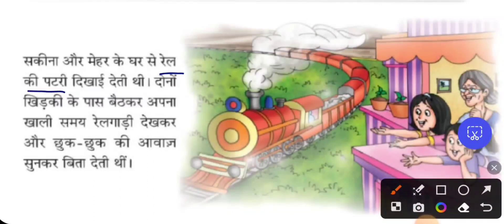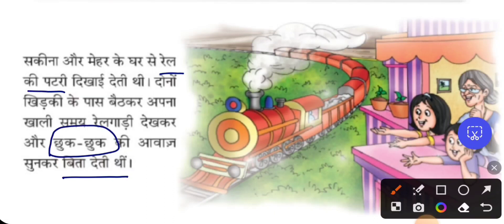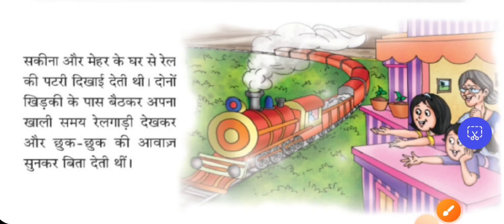They were able to see the railway track from the house. Both Sakheena and Meher used to sit near the window and observe the train going nearby, hearing the sound of the train — chuk chuk. Here, chuk chuk is a word pair, Shabda Yugna, where the same word is repeated and joined by a hyphen. This is one kind of word pair where the same word is repeated. So they used to while away their time by listening to the chuk chuk sound and watching the train from the room window.